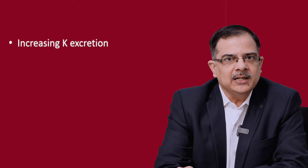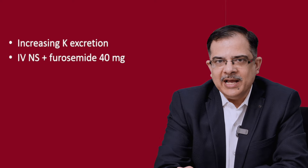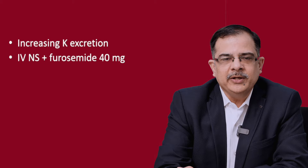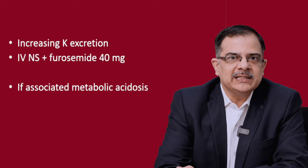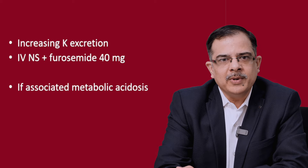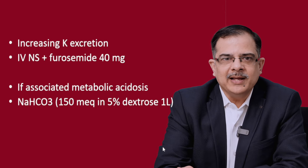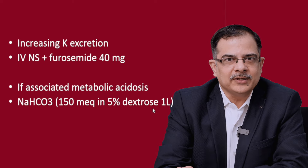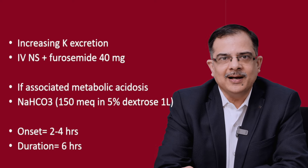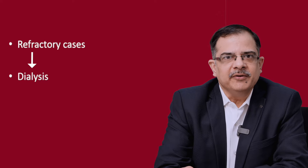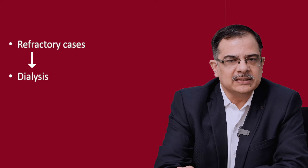Another method of decreasing blood potassium is increasing potassium excretion via the kidneys. For that we give IV normal saline and add furosemide 40 mg intravenous. If there is associated metabolic acidosis, only in that scenario we give sodium bicarbonate, which can also increase urinary excretion of potassium. The dose of sodium bicarbonate is 150 ml in 1 litre of 5% dextrose. Onset of action is 2 to 4 hours and the effect lasts 6 hours. For refractory cases we go for hemodialysis, which is the most definitive and reliable way to decrease serum potassium levels, especially in CKD patients.